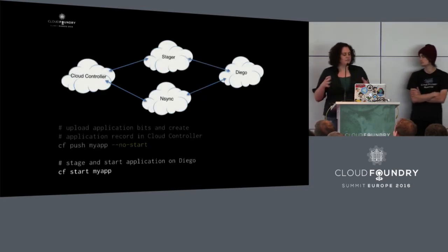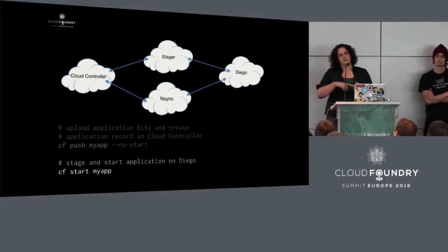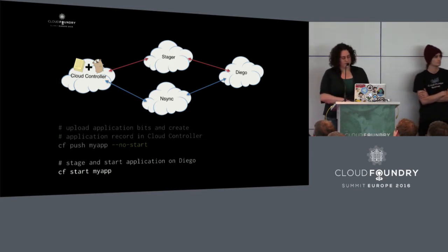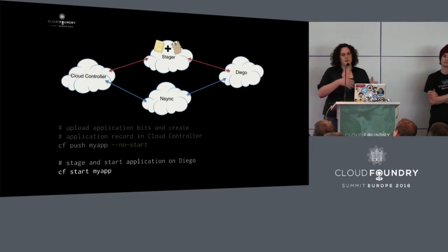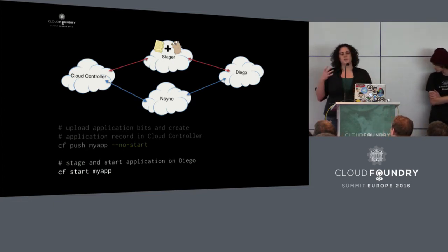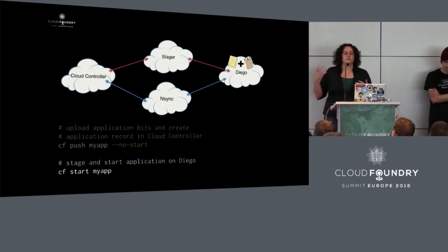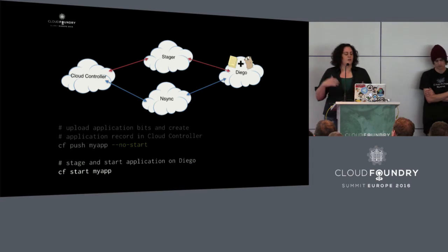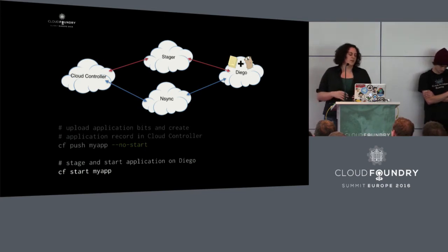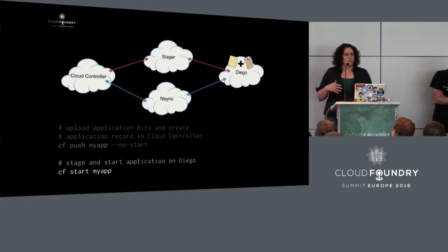CF start is composed of two phases: staging and actually starting the app. During staging, a component called the stager — a translation layer between the cloud controller and Diego — creates a task telling Diego to combine your bits with a Buildpack and produce a droplet. If you haven't explicitly specified the Go Buildpack, all Buildpacks run their detect script to see which one applies. Since we have a .go file, the Go Buildpack says it can handle it, then combines with your app bits to create an executable that can run anywhere in the CF system.